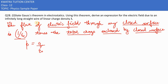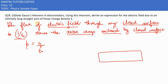Now we need to derive an expression for the electric field due to an infinitely long straight wire of linear charge density λ. We have a line charge, and the wire is infinitely long and straight. Let's say the wire carries a positive charge over its entire surface.